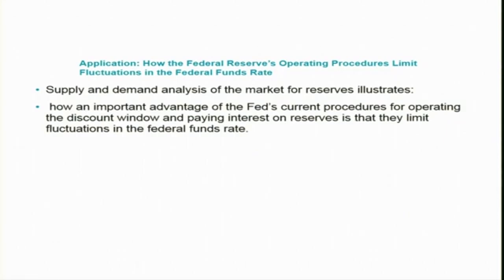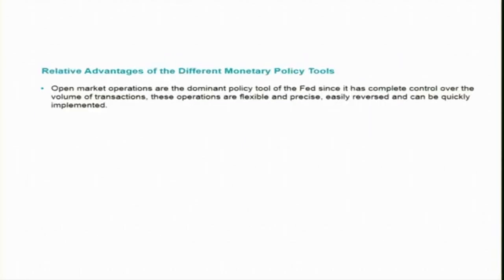The question is: how does the Federal Reserve's operating procedure limit fluctuations in the Federal funds rate? Supply and demand analysis illustrates an important advantage of the Fed's current procedure — operating the discount window and paying interest on reserves limits fluctuations in the Federal funds rate. What we normally see in the news, eight times a year, is the outcome of the Federal Open Market Committee (FOMC), which is the main influencer in determining the Fed funds rate.